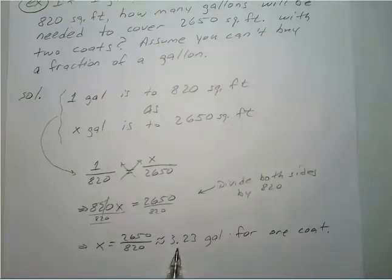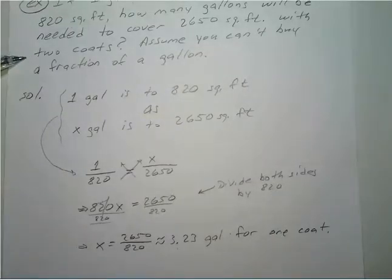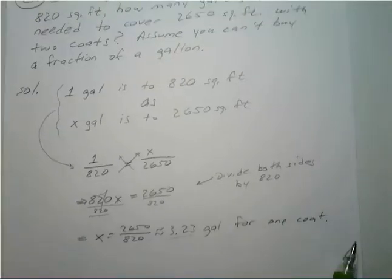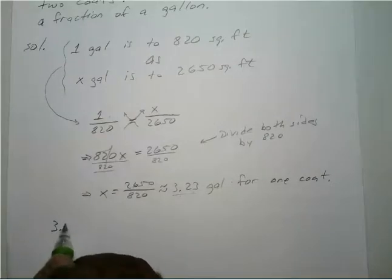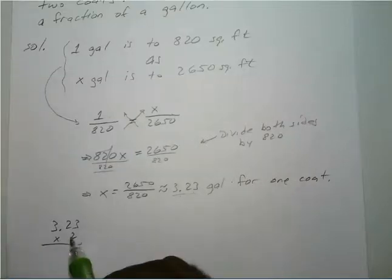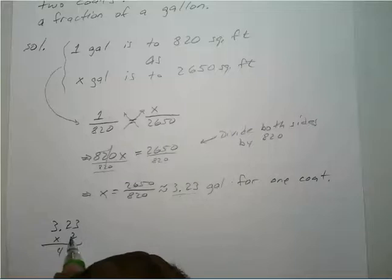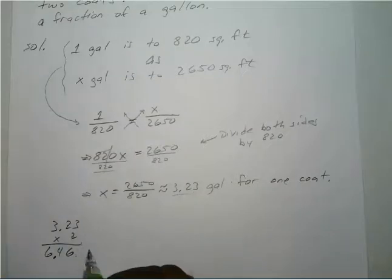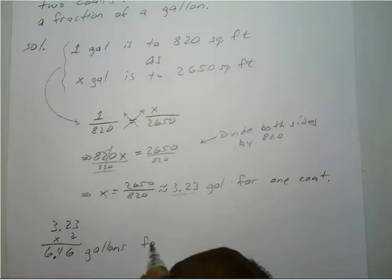That's how much we would use for one coat of paint. But remember, we want to put two coats on there, so we multiply this by 2. This gives us one coat and if we double it we get two coats. So we have 3.23 times 2: 2 times 3 is 6, 2 times 2 is 4, 2 times 3 is 6, and we have two decimal digits so we move the decimal point twice — giving us 6.46 gallons of paint for two coats.